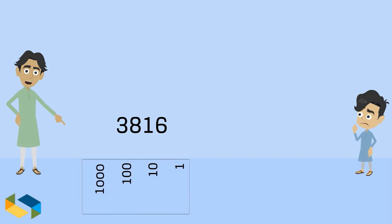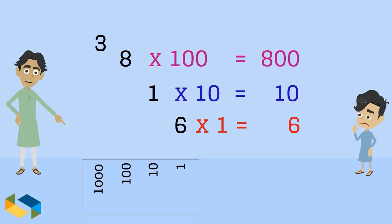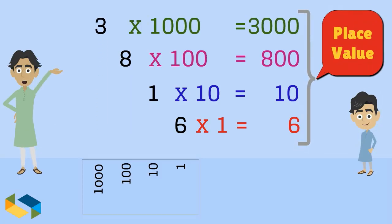In this particular case, the number 3816 is in fact sum of six ones, one ten, eight hundreds and three thousands, each having its own place value.